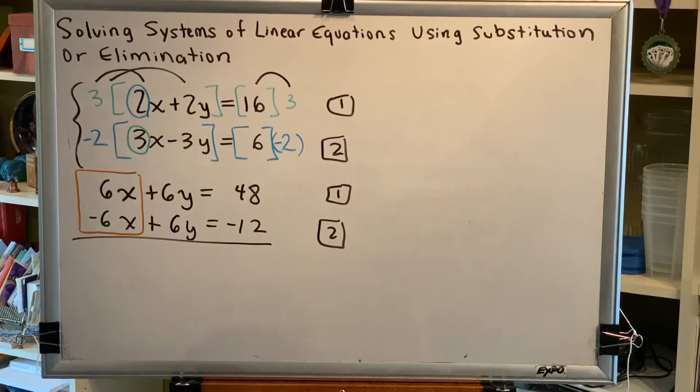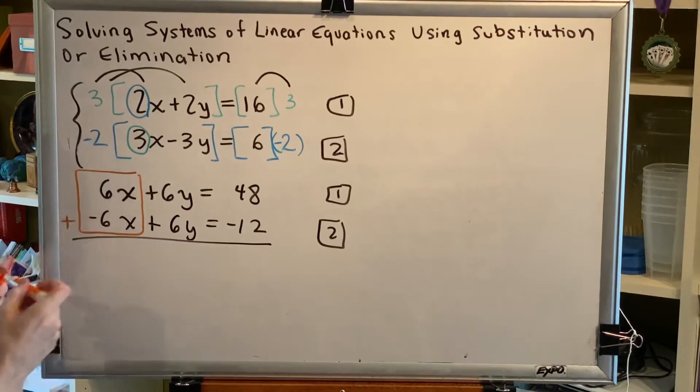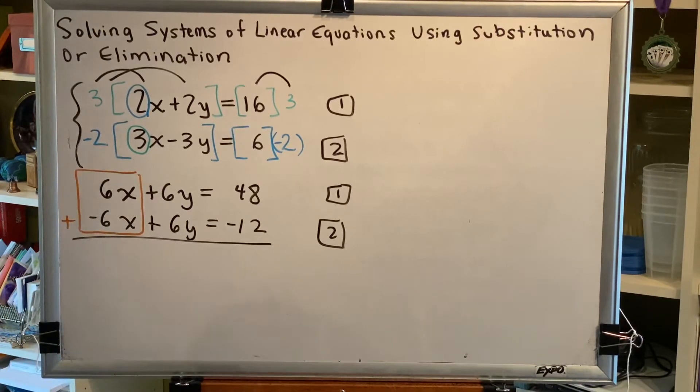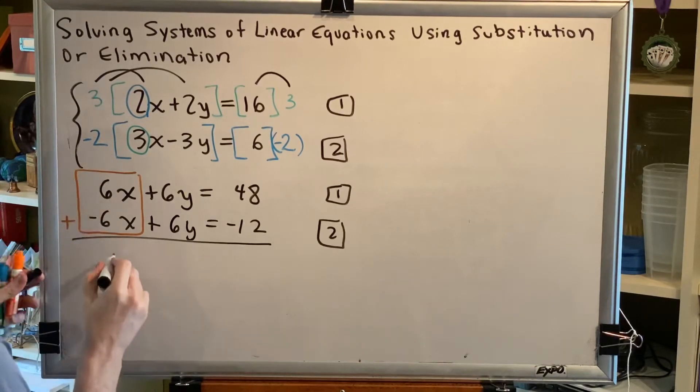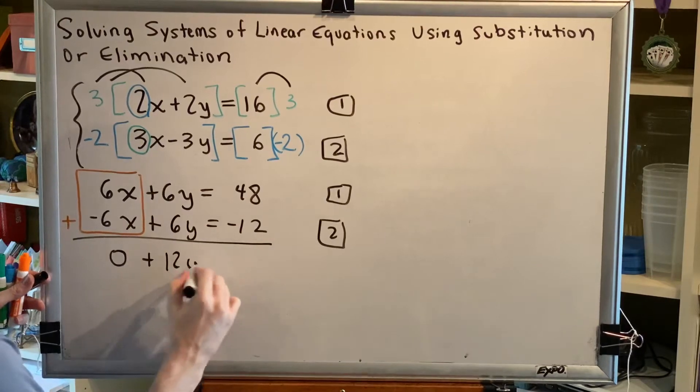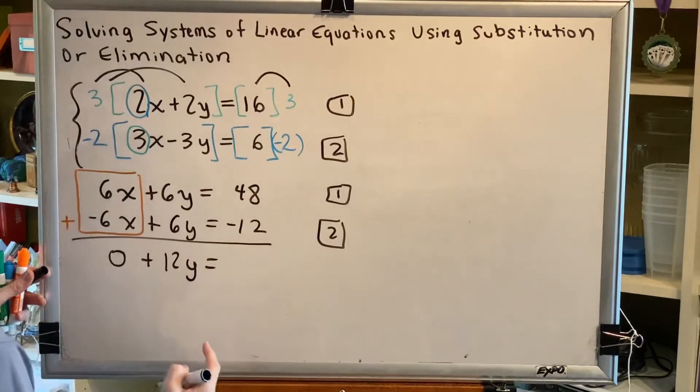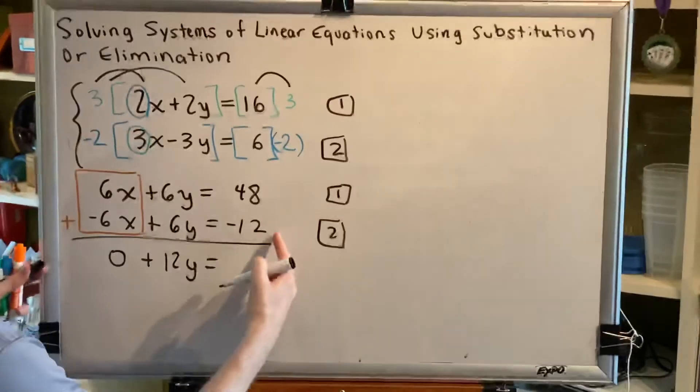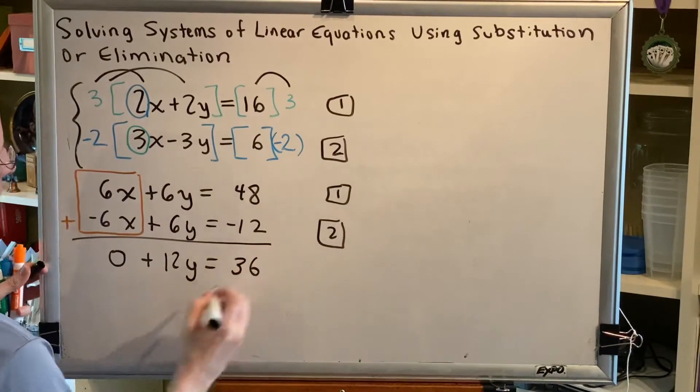What happens when you add opposites? Well, they cancel to the number 0. So we're now able to add our two equations together. 6x plus negative 6x makes 0. 6y plus 6y makes 12y. And 48 plus negative 12, or 48 minus 12, is equal to 36.